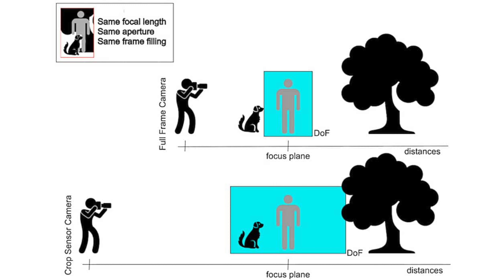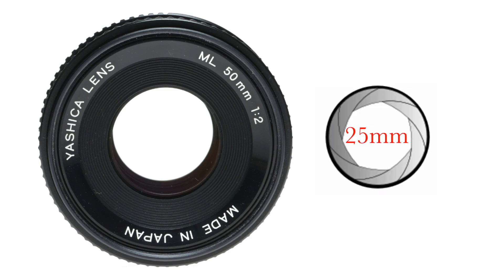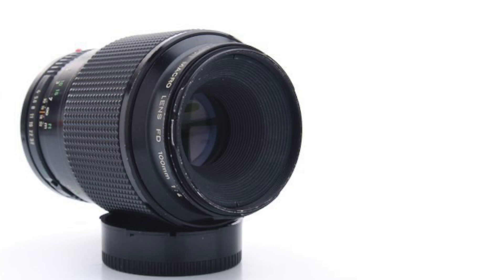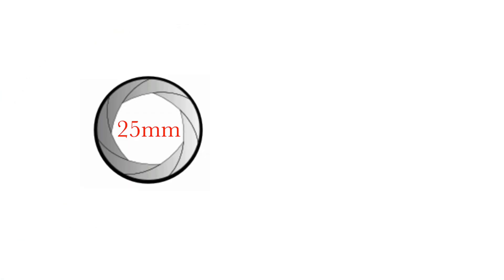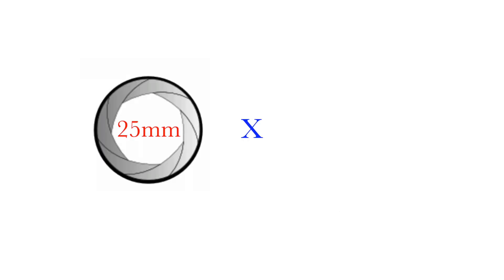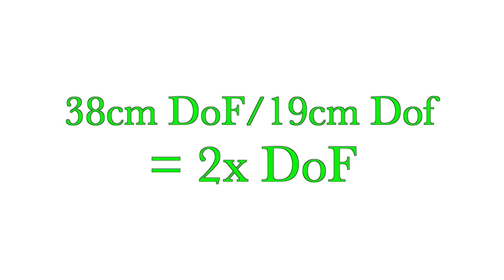Practically speaking, the longer the focal length, the further you must be from the subject. If using a 50mm f2 lens on a micro four-thirds camera, you still have the same aperture opening of 25mm, but your focus distance is doubled, which increases the depth of field. It is the equivalent of using a 100mm f4 lens, which also has a 25mm aperture opening. A 25mm aperture opening focused at 2 meters will result in a 19cm depth of field, while the same 25mm aperture opening focused at 4 meters will result in a 38cm depth of field, or double the depth of field.